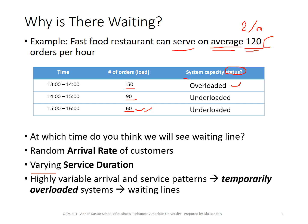Whenever we have high variation in the arrival rate and high variation in the service rate, the system becomes overloaded temporarily — even for a very small fraction of time — and that's when you will have a waiting line. This is very important to understand: waiting lines happen even if you have, on average, an underloaded system, because that underloaded system can in fact become overloaded temporarily.